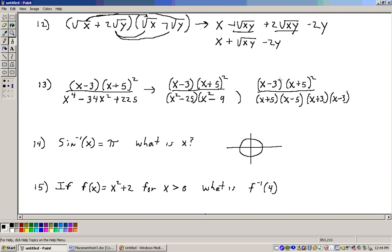Crossing out some like terms that divide to zero, they cancel out. One of these cancels out with this. We're left with x plus 5 over x minus 5, x plus 3, which is the answer, D.